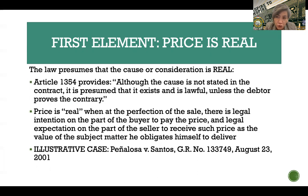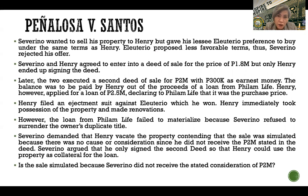The assigned case for this is Peñalosa versus Santos. In this case, Severino wanted to sell his property to Henry, and he gave his lessee Eletario the preference to buy under the same terms as Henry. The lessee turned out to propose less favorable terms, so Severino rejected the lessee's offer. Thereafter, Severino and his buyer Henry entered into a deed of sale, and the price was fixed at $1.8 million. But only Henry, the buyer, ended up signing the deed.